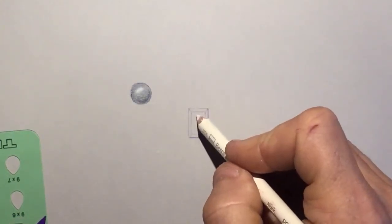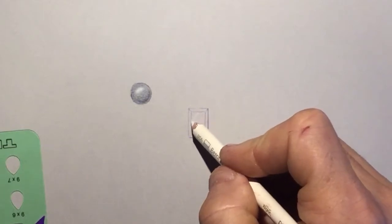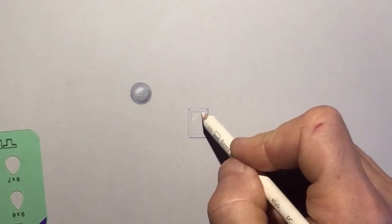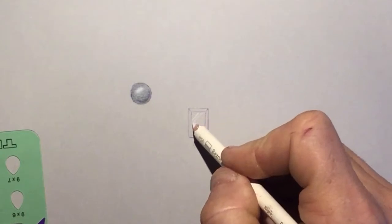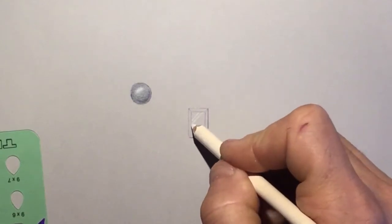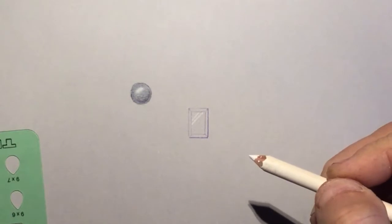So before I start doing any coloring, I'm going to actually take my white and I'm going to draw in two parallel lines right here and those are going to be my shimmers.